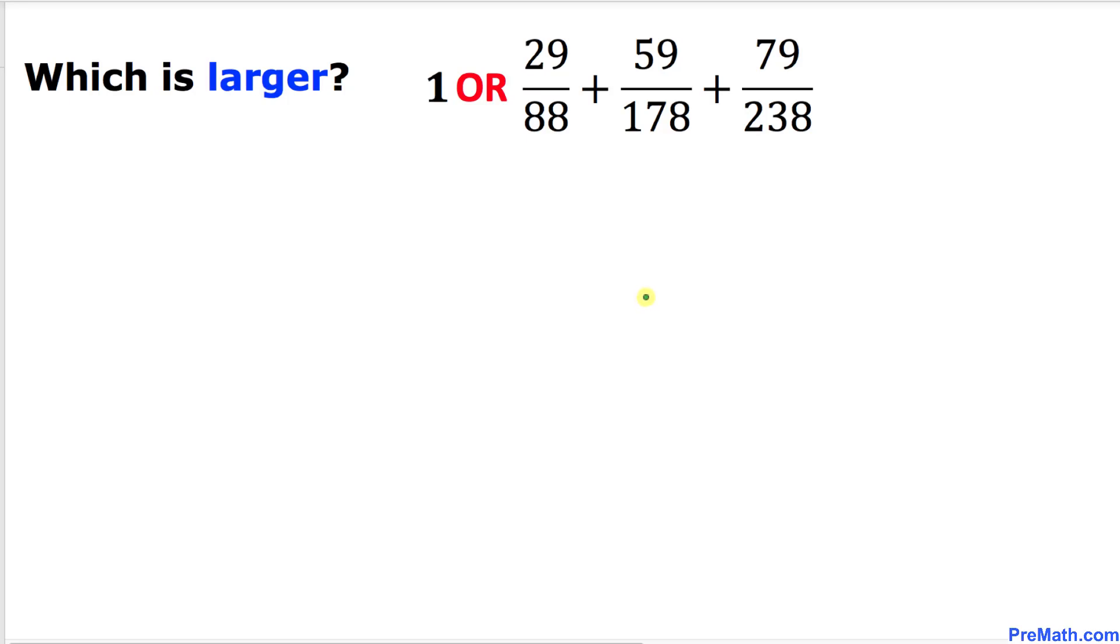Welcome to pre-math. In this video tutorial we are going to compare these two numbers. The first one is 1, and the other number is the sum of these fractions: 29 divided by 88, plus 59 divided by 178, plus 79 divided by 238. Now we are going to see which number is bigger, and moreover, no calculators are allowed.